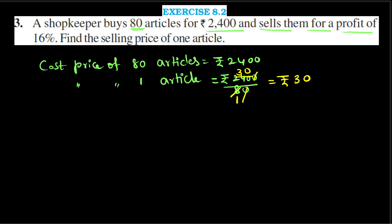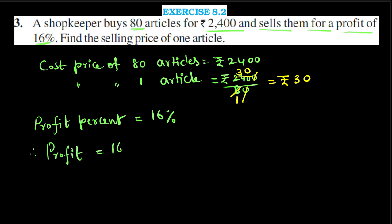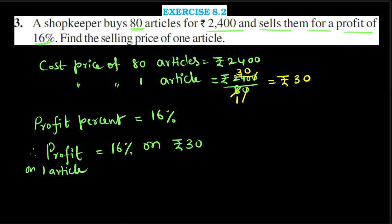He sells them for a profit of 16%. Profit percent equals 16%. Profit on one article equals 16% of Rs. 30, which is 16/100 times 30. Cancelling zeros and simplifying: 16 times 3 is 48, divided by 10, equals Rs. 4.8. This is the profit on one article.